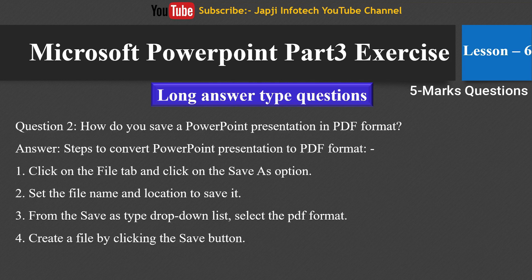The second question: how do you save a PowerPoint presentation in PDF format? The steps are: click on the File tab and click on Save As, set the file name and location, from the Save as Type drop-down list select PDF format, then create the file by clicking the Save button.